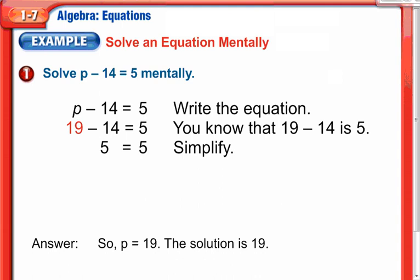Here's one we're going to look at right away: P minus 14 equals 5. Now they want us to solve some of these mentally. So we're just looking at it, trying to figure out what number minus 14 equals 5. You can see all the work is laid out for us. Just mentally, 19 minus 14 equals 5. 19 is our solution. So that's a pretty easy one to start with.